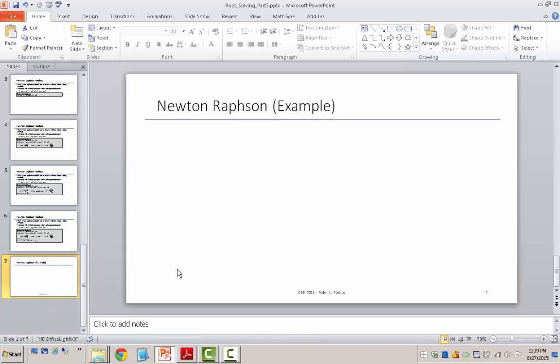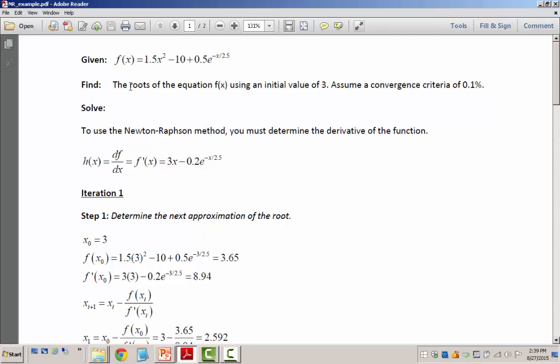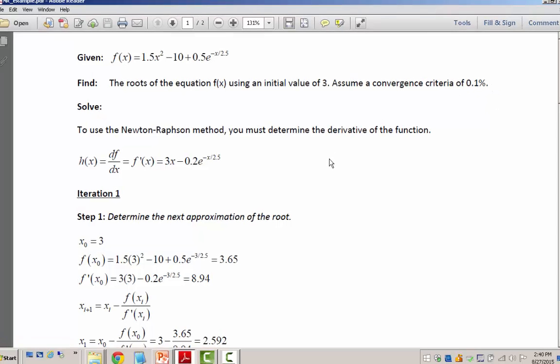Let's look at a quick example. We'll study this function: f of x equals 1.5 x squared minus 10 plus 1 half e to the negative x over 2.5. Here's the exponential term which limits us from using the quadratic formula. We want to find the roots starting with an initial value of 3 and using a convergence criteria of 0.1%.